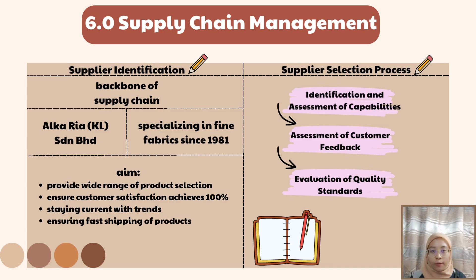The supplier selection process involves the following steps. First, identification and assessment of capabilities — referring to potential supplier abilities to fulfill our specific requirements; Alcaria has stated that they are well experienced. Second, assessment of customer feedback — it is crucial to collect customer feedback to understand supplier performance; one of Alcaria's customers noted that Alcaria has good quality and nice designs with affordable prices. Third, evaluation of quality standards — we evaluate the supplier's manufacturing through their official website to see how far their performance extends; Alcaria has stated that they have quality assurance.